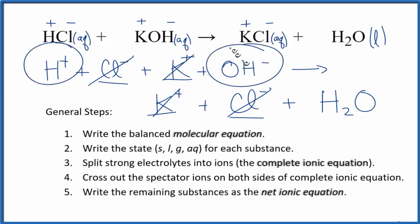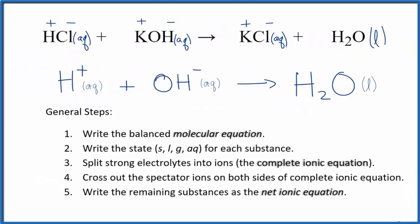H plus plus OH minus gives us H2O. I'll clean this up, write the states, and then we'll have the net ionic equation for HCl plus KOH. And this is the net ionic equation for HCl plus KOH.